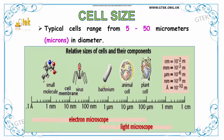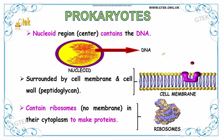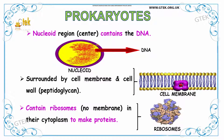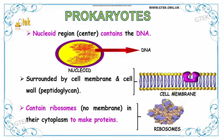The relative size of cells and their components are depicted here. These levels are seen through the electron microscope and the light microscope. Now we are going to see about prokaryotes, which is a nuclear region that contains DNA. It is surrounded by a cell membrane and cell wall, and it contains ribosomes in the cytoplasm to make proteins.